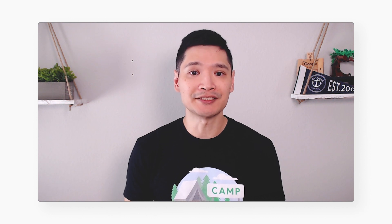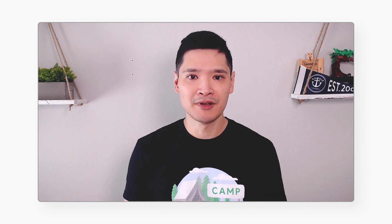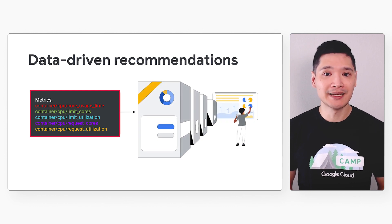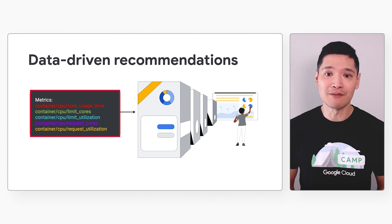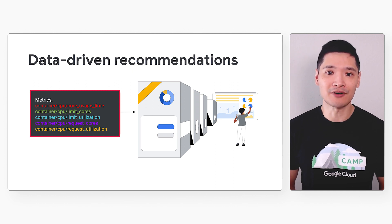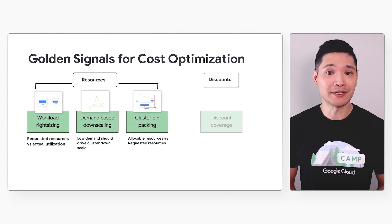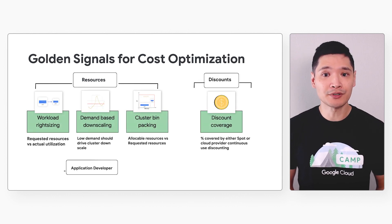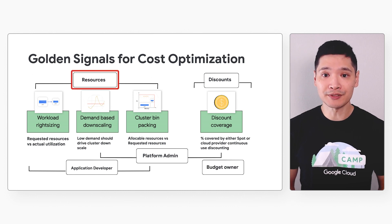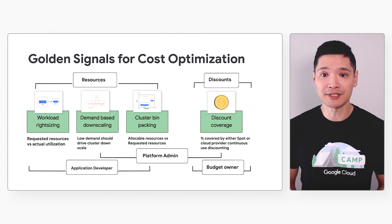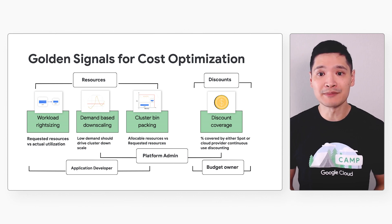The other path to take a look at is Assessment. This is for organizations already running on GKE. With a data-driven engagement, we can help you understand what's running in your current environment and make tailored recommendations to help you minimize costs while maximizing reliability and performance. There are several key golden signals that we'll look at during the assessment. These four golden signals are divided into two categories: resources and discounts. App developers and platform administrators are responsible for the resource optimizations, while platform administrators and budget owners are responsible for the discount optimizations.